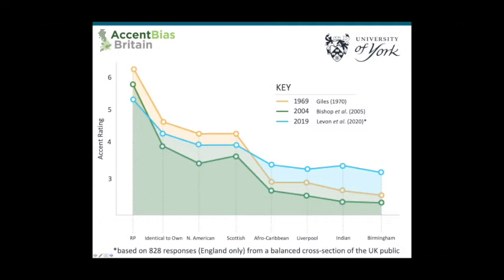Looking at this data: we've got the accent rating from low to high on the vertical axis and different accents of English represented. There are three surveys — one from the late 1960s, one from the 2000s, and our most recent 2019 data shown in blue. RP comes out ranked highest for prestige and pleasantness, Birmingham comes out bottom of the pile, and various other accents are listed in between. The blue line for our 2019 data shows a flatter curve — meaning there isn't as big a difference between the most highly rated accent RP and the lowest rated one. But overall the slope is the same — not much has changed in the last half century.